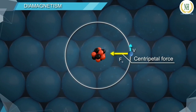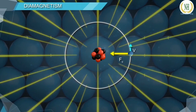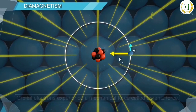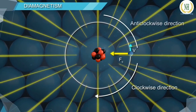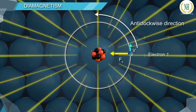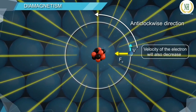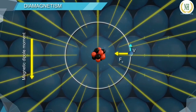When the diamagnetic material is placed in an external magnetic field, each of the orbital electrons experiences a mechanical force called the Lorentz force. The direction of the Lorentz force depends on whether the electron is moving clockwise or anticlockwise. If the electron is moving anticlockwise, the Lorentz force is in the radially outward direction. Since centripetal force and Lorentz force act on the same line but in opposite directions, the effective centripetal force decreases, the velocity decreases, and the magnetic dipole moment of the electron decreases.